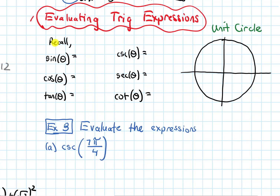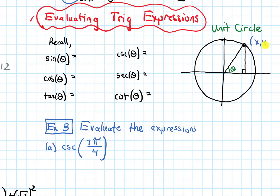Recall that if I use the unit circle to write down what my trig functions equal, I'm going to draw a triangle. I'll make some angle theta and drop a right triangle from this point down to the x-axis. This point has coordinates x comma y, where x represents the horizontal length and y represents the vertical length. Because it's a unit circle, the radius — or hypotenuse — has a length of one.